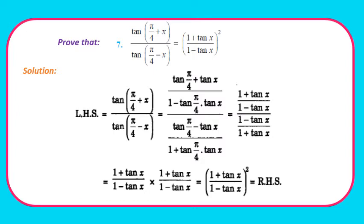Question 7: Prove that tan(π/4 + x)/tan(π/4 − x) = ((1 + tanx)/(1 − tanx))². Taking LHS, and applying the tan(x+y) identity in the numerator and tan(x−y) in the denominator: numerator = (1 + tanx)/(1 − tanx), denominator = (1 − tanx)/(1 + tanx). Dividing gives ((1 + tanx)/(1 − tanx))², which is our RHS. We used two different identities here. Pause and note down the solution.